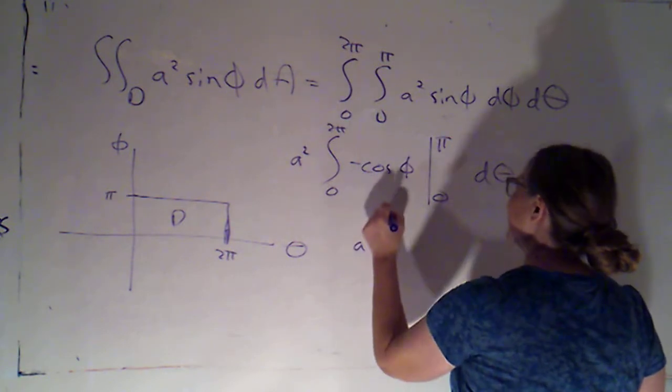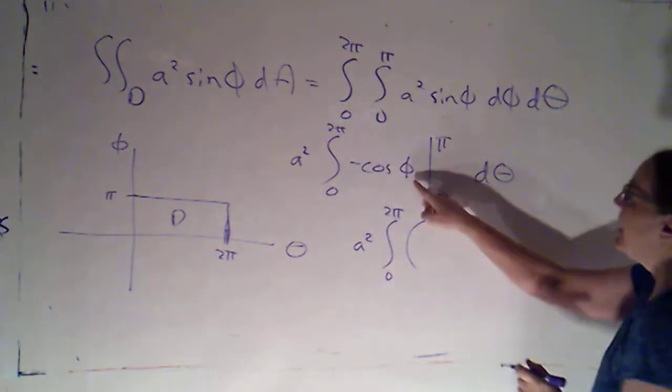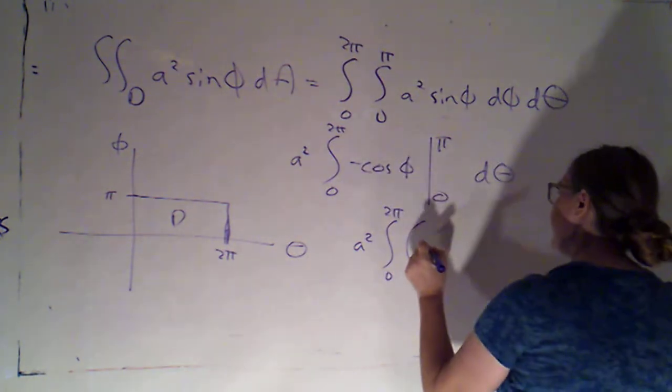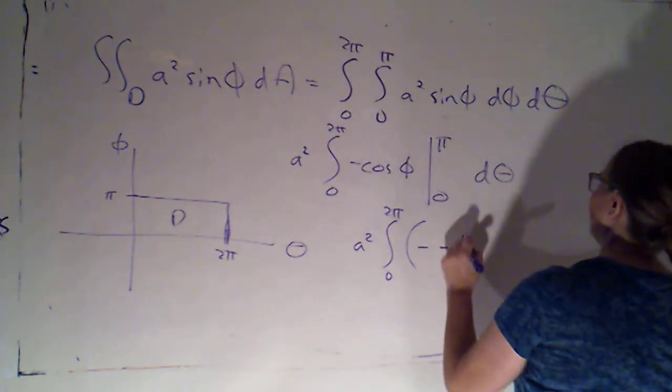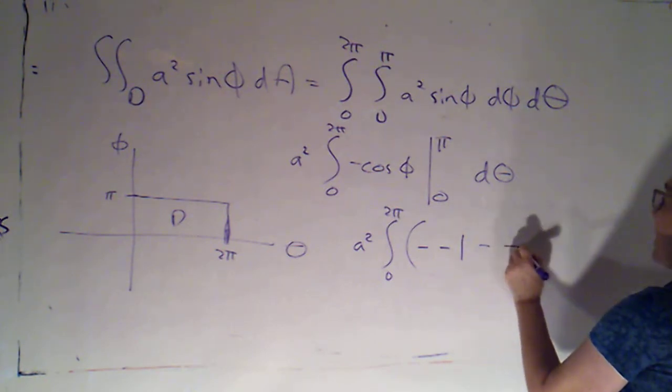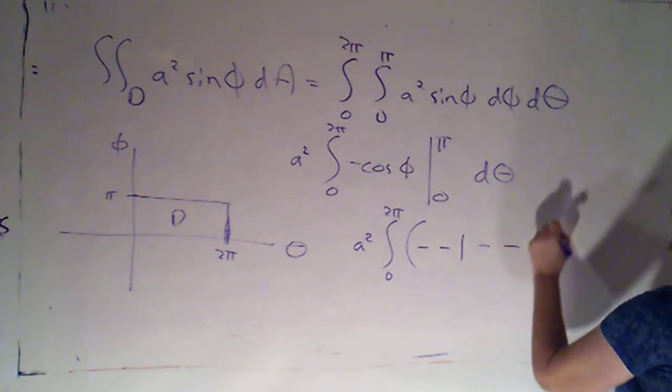So that's going to be a squared times the integral from zero to two pi. Cosine of pi would be negative one, the opposite of that, so the opposite of negative one, which of course is going to become one, minus the opposite of cosine of zero, which is one. And then d theta.